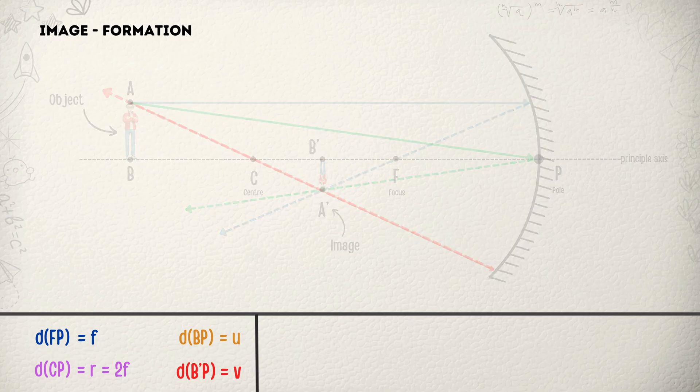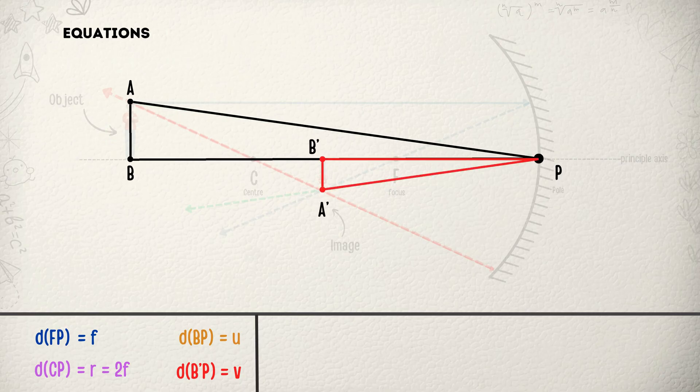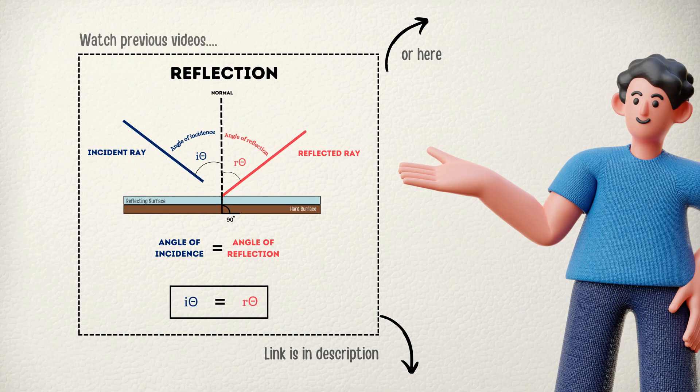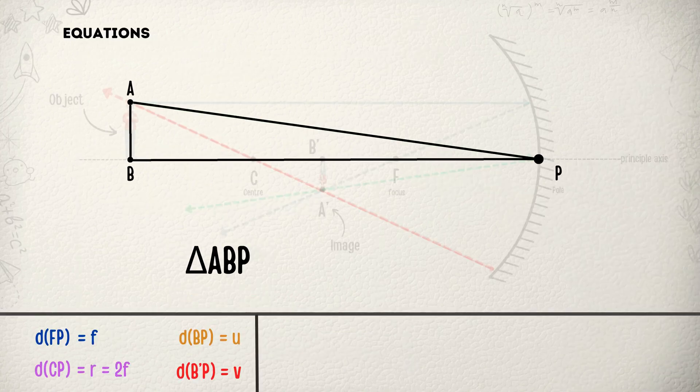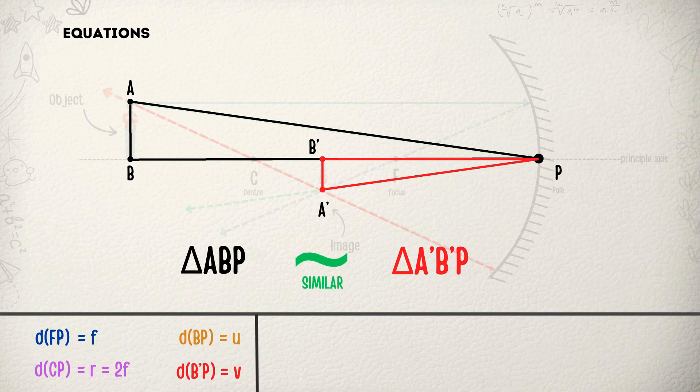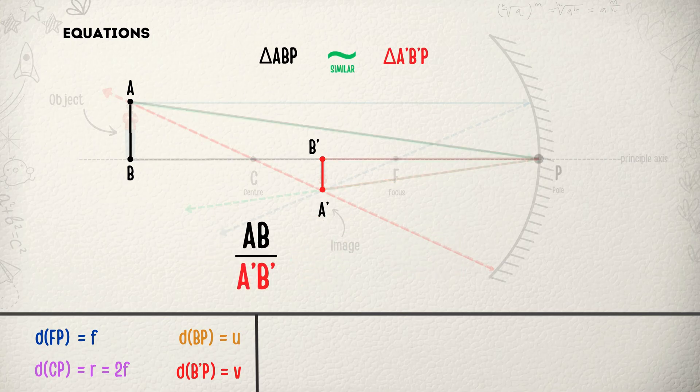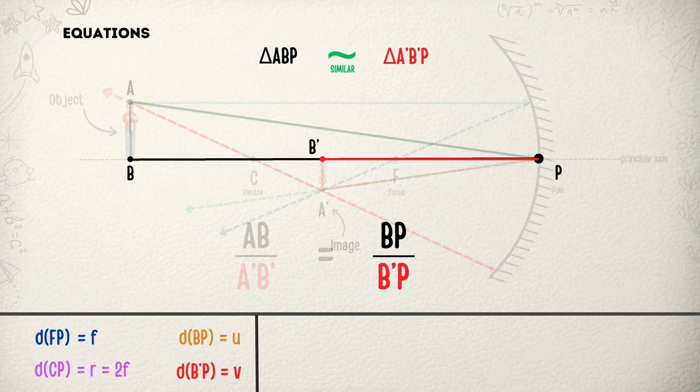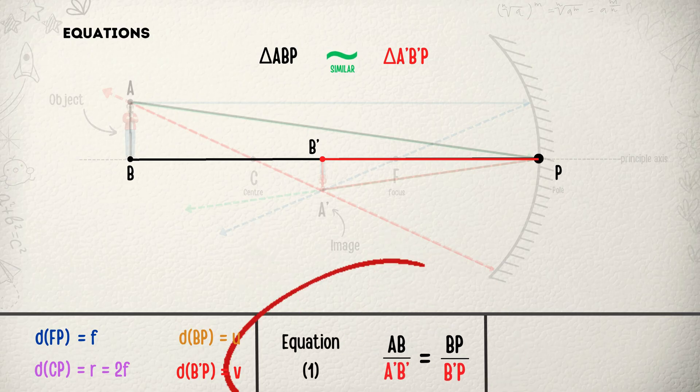Let's focus on our first triangle pair, triangle ABP and triangle A'B'P. Here angle APB and angle A'PB' will be equal because in mirrors angle of incidence is same as angle of reflection. That's why triangle ABP and triangle A'B'P are similar triangles. It means AB divided by A'B' is equal to BP divided by B'P. We will call it equation number 1.